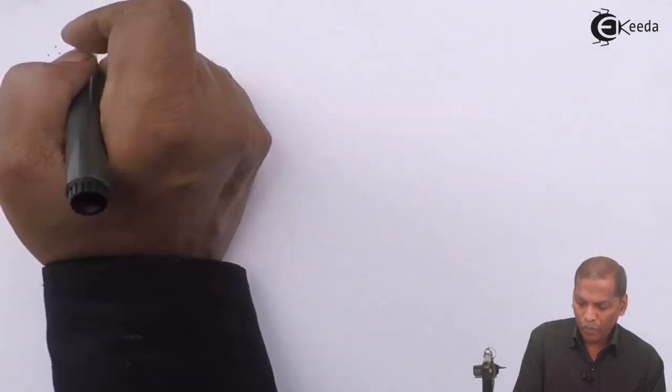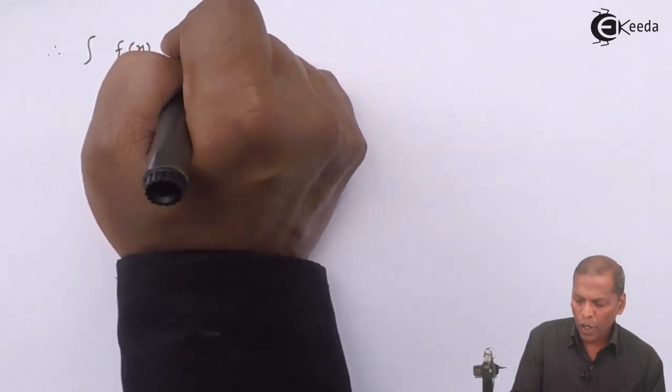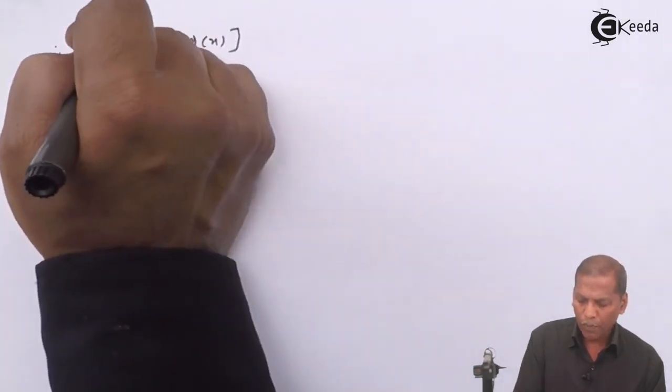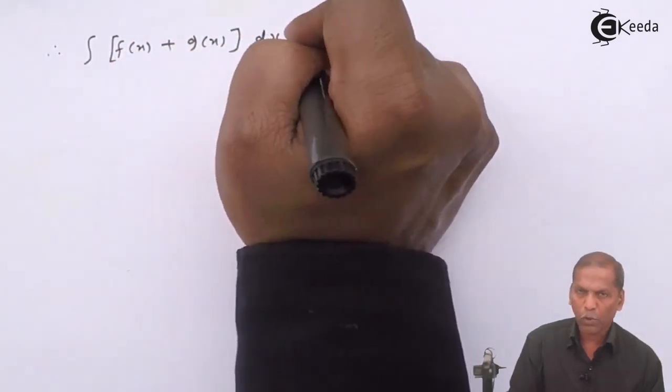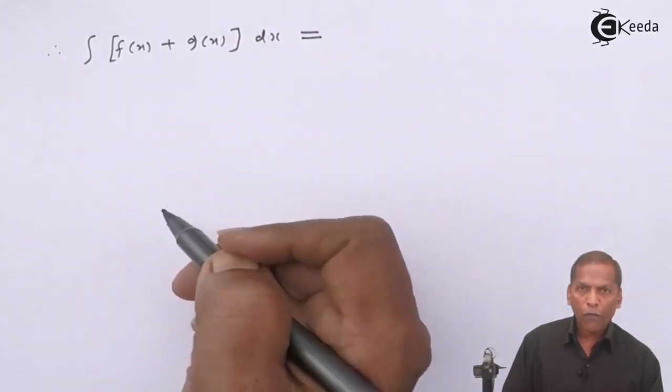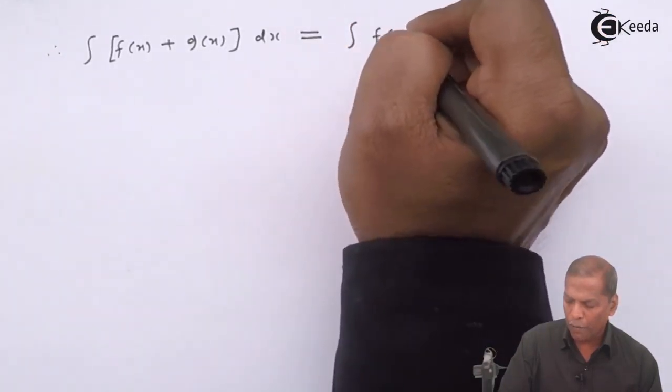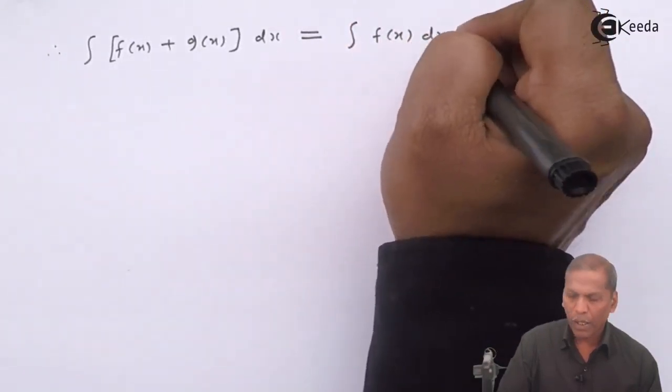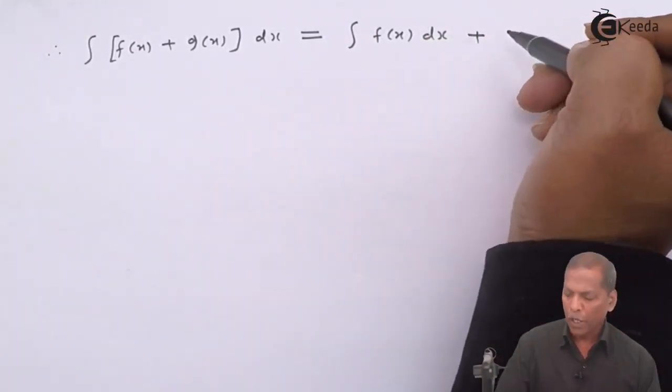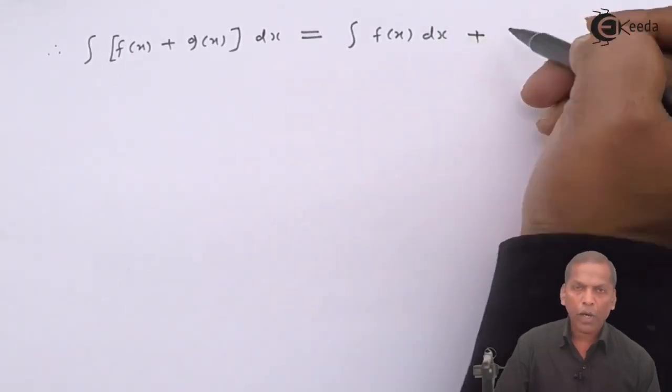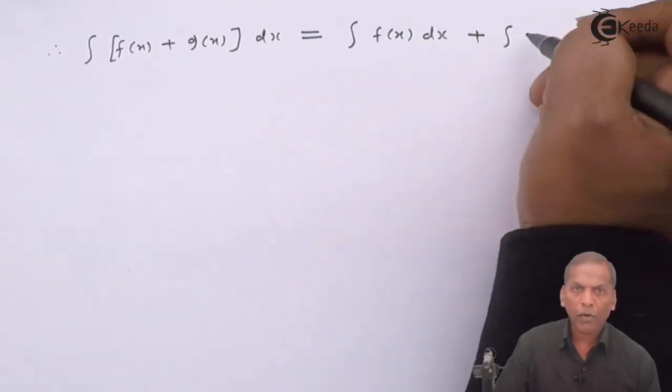The next step will be: integral [f(x) + g(x)] dx is equal to capital F(x), which is equal to integral f(x) dx by using equation 1, plus capital G(x), which is equal to integral g(x) dx by using equation 2.